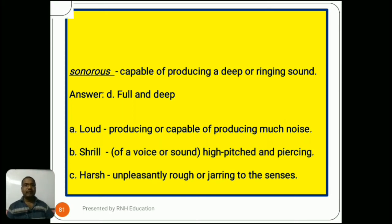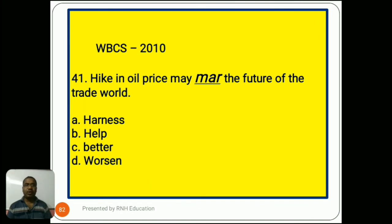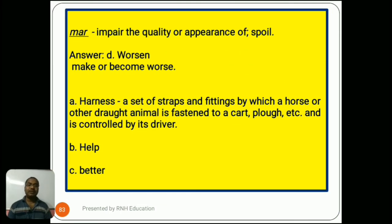Question number 41, from 2010: 'Hike in oil price may mar the future of the trade world.' Options are A) harness, B) health, C) better, D) worsen. The word mar means impair the quality or appearance of — spoil. So the right answer is D) worsen, meaning make or become worse. Options B (health) and C (better) are very common words needing no explanation. Option A, harness, refers to a set of straps by which a horse is fastened to a cart.